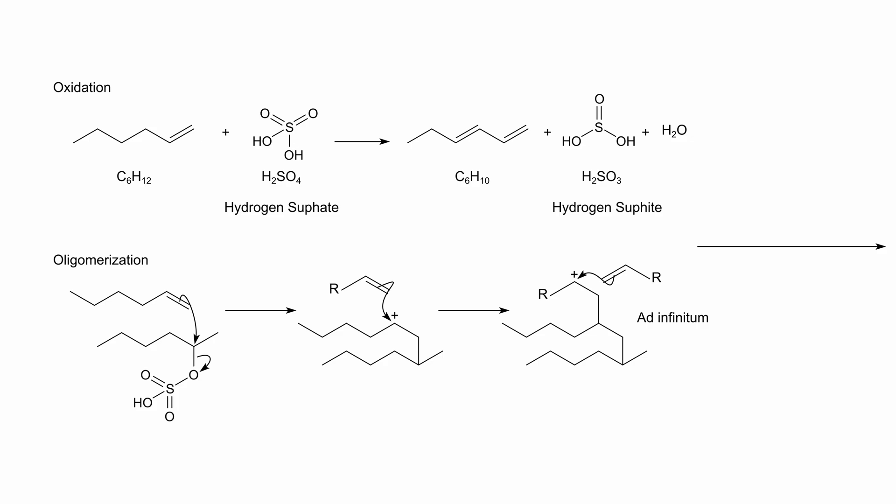Another process that will occur is oligomerization. Without water breaking down the sulfates it's highly possible for the alkene to act as a nucleophile and react with sulfate intermediates and this will cause oligomerization which is basically adding lots of monomers together to form a big clump of monomers. You could kind of call this polymerization but I don't think it's quite to that extent. It goes ad infinitum, it can keep repeating and make bigger and bigger molecules. These large molecules will then also get oxidized by the sulfuric acid, hydrogen sulfate.